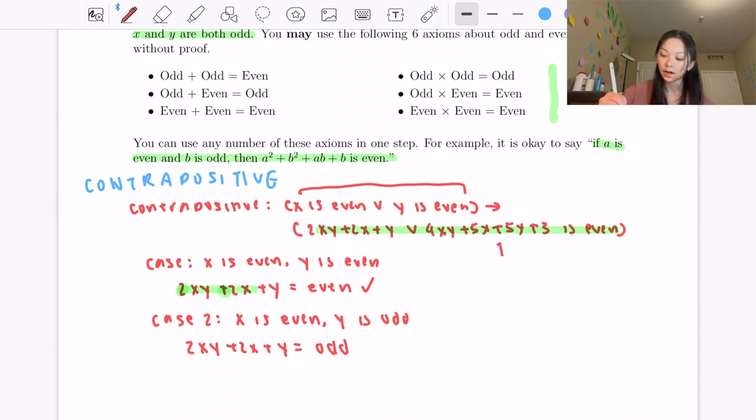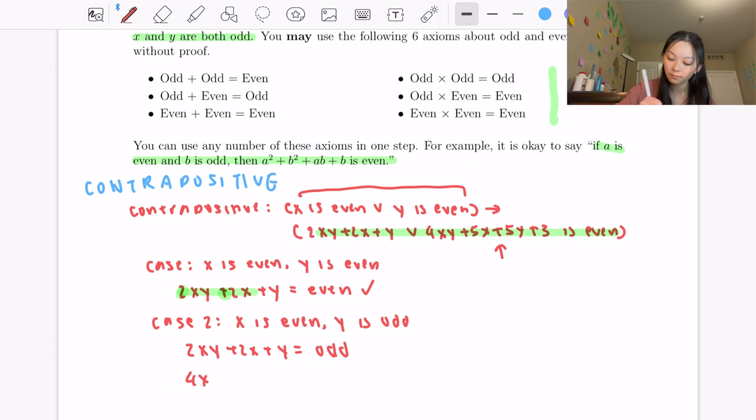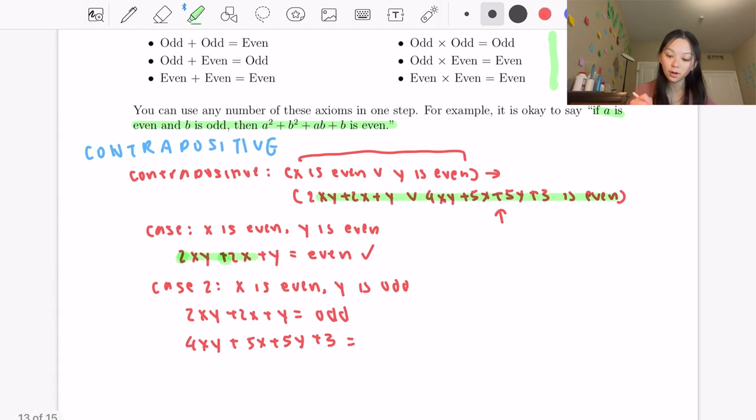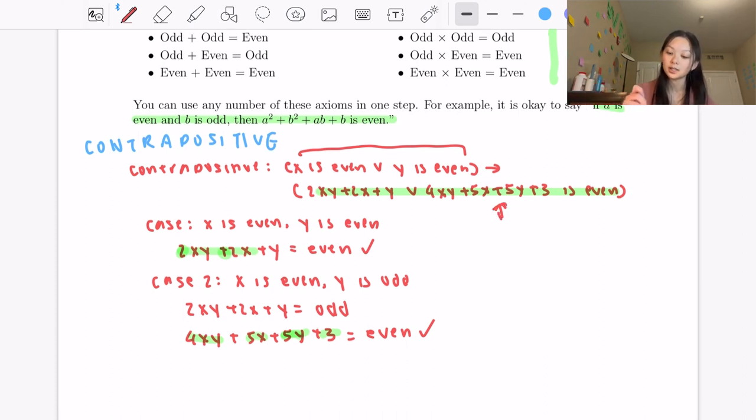So now let's try out this equation: 4xy + 5x + 5y + 3. So we know that this part is even, and then since x is even, 5x is also even. Since y is odd, 5y is odd. So we have an odd plus an odd which is going to be equal to an even. So once again, this case is proving that one of these equations is even.